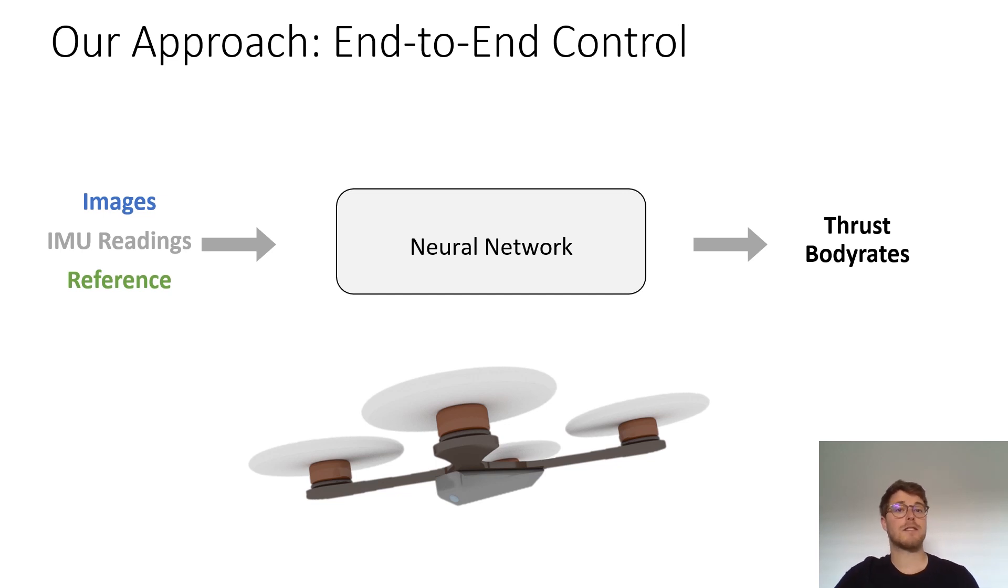The acrobatic maneuvers that we've seen before were performed by a learned sensorimotor policy. In contrast to classical approaches that rely on the separation of state estimation and control, our approach is to directly learn an end-to-end controller in the form of a neural network. This controller maps from sensory inputs such as images, IMU readings and a reference, directly to control commands in the form of collective thrust and body rates.